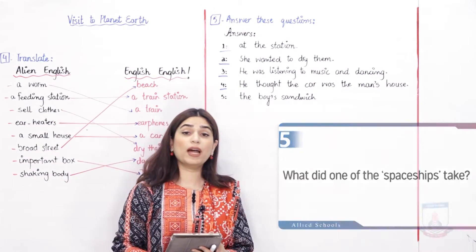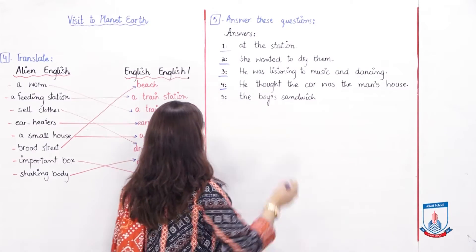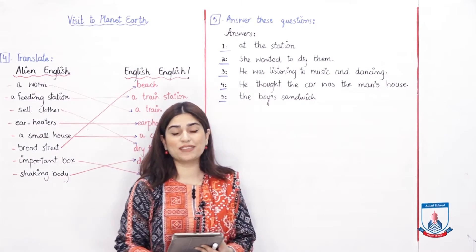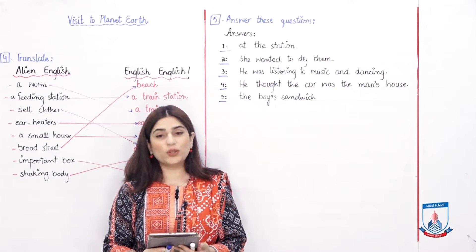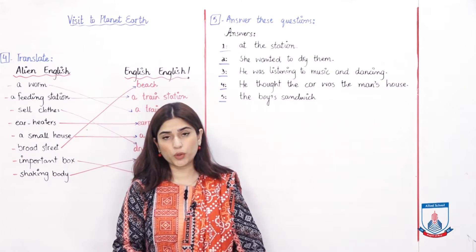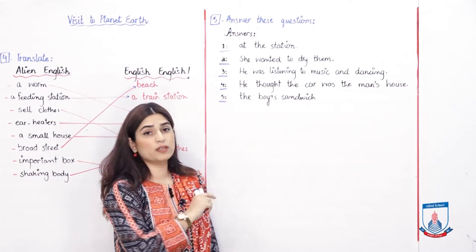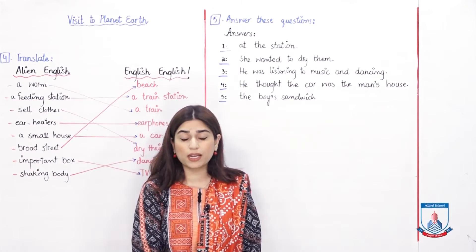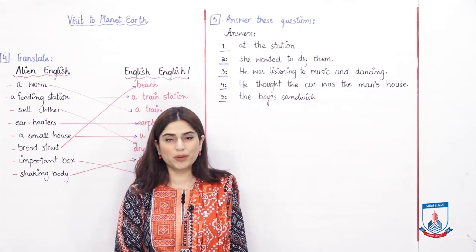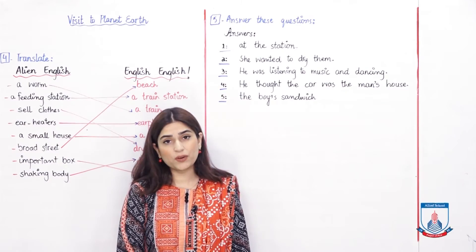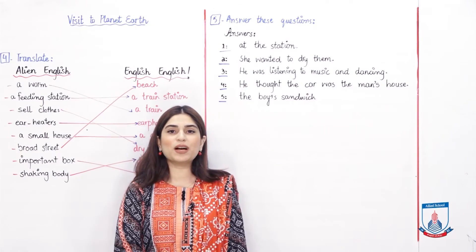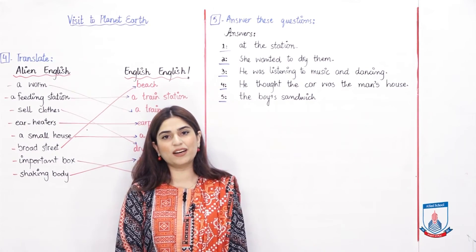Number 5: What did one of the spaceships take? The boy's sandwich — that which the boy was about to eat. So children, we have answered all these questions. Your task is to write the answers to all these questions in your notebook. Lesson number 3 is now completely done. We will meet in the next video lesson where together we will solve lesson 4 and lesson 5. Until then, keep doing your work and take care of yourself. Allah Hafiz.